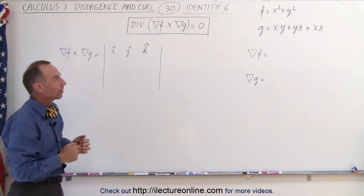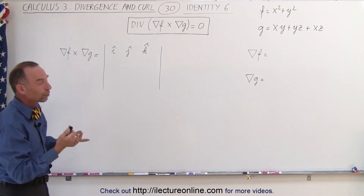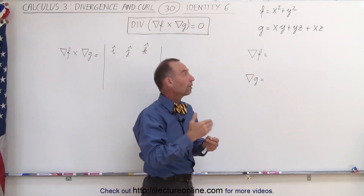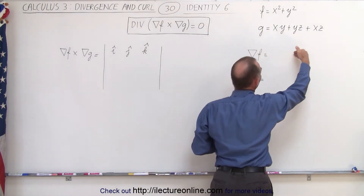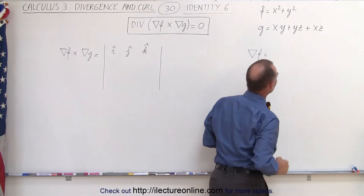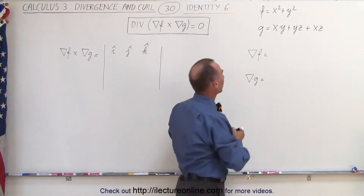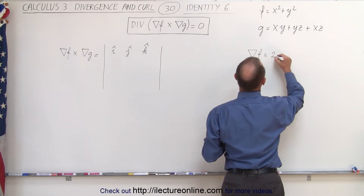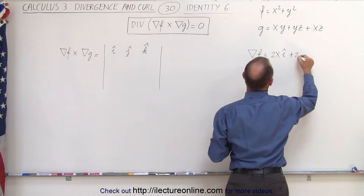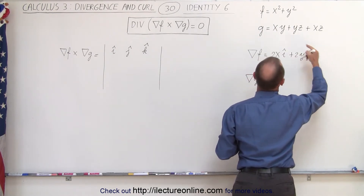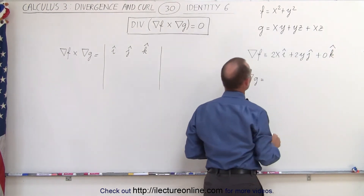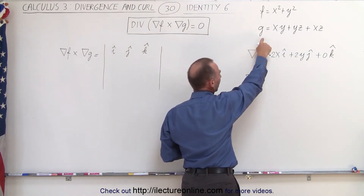So let's try that with this example right here. Let's first find the gradient of f and g. The gradient means we take the partial derivative with respect to x times i, the partial derivative with respect to y times j, and the partial derivative with respect to z in the k direction. For f, we get 2x in the i direction, plus 2y in the j direction, and zero in the k direction.